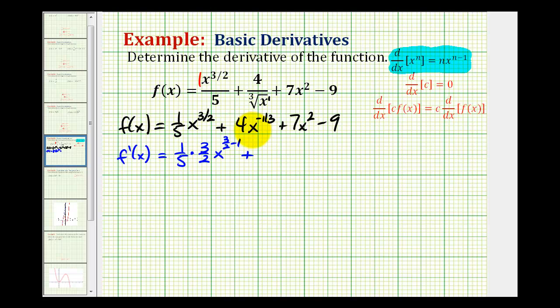Plus the derivative of four x to the negative one-third will be four times the derivative of x to the negative one-third. So again, we're going to multiply by the exponent, and then we're going to subtract one to get the new exponent. So we'll have negative one-third minus one.